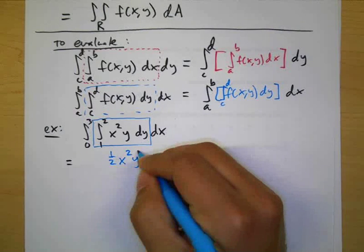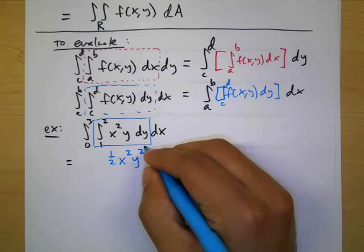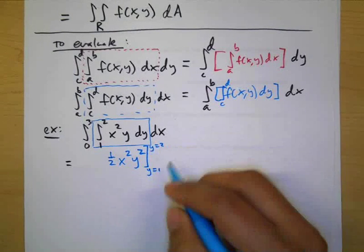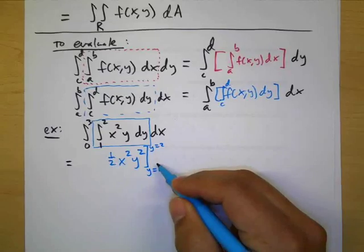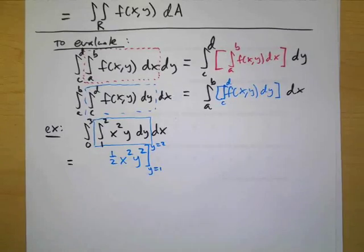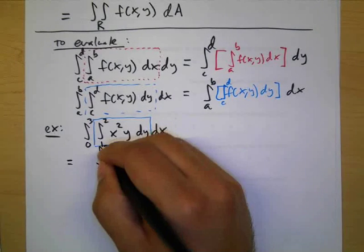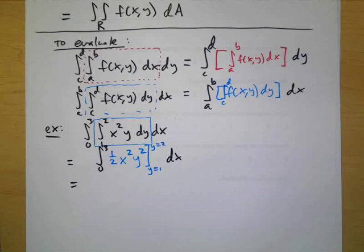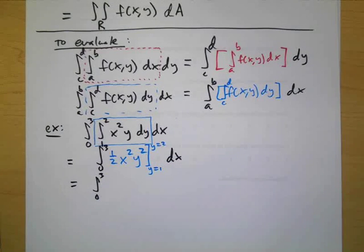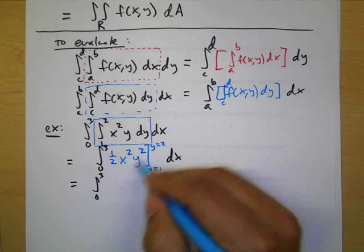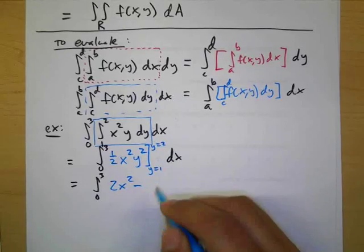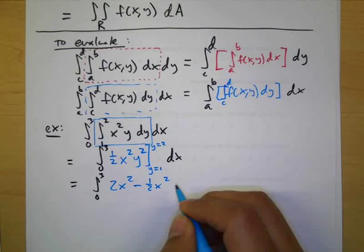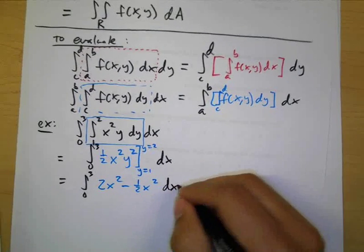One half x squared y squared. And now this is from y equals one to y equals two and I do make a habit of writing the variable especially when we get double triple integrals you want to always make sure you know what variable you're plugging in. This is still from zero to three. And now if I plug in the bounds, plugging in two first gives you what? Two x squared minus one half x squared dx.